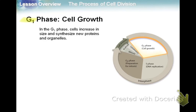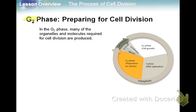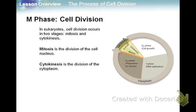G1 stands for growth — cells increase in size, make new proteins and organelles. The S phase stands for synthesis — a new DNA molecule is made, and the chromosomes are replicated. G2 — I like to remember this as 'getting ready' — is preparing for cell division. Many of the organelles and molecules required for cell division are produced during G2.